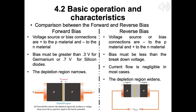Now let us compare the forward and reverse bias. On the left is the forward bias, where the voltage source connections are positive to the P material and negative to the N material. This bias must be greater than 0.3 V for germanium or 0.7 V for silicon diodes, and the depletion region narrows. In reverse bias, the connections are negative to the P material and positive to the N material. The bias must be less than the breakdown voltage, current flow is negligible, and the depletion region widens.